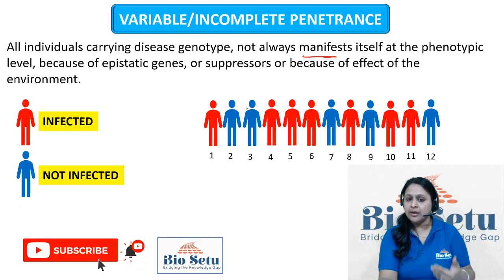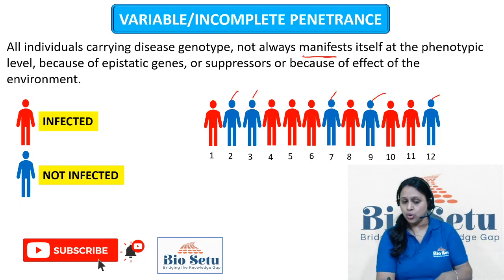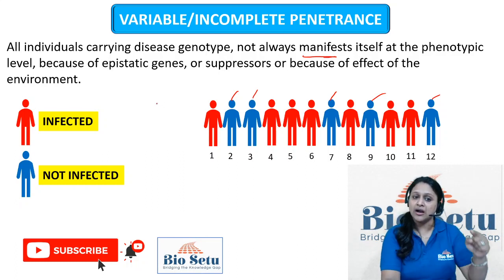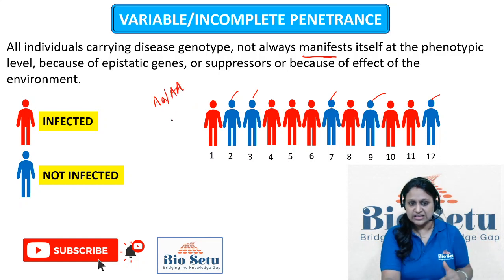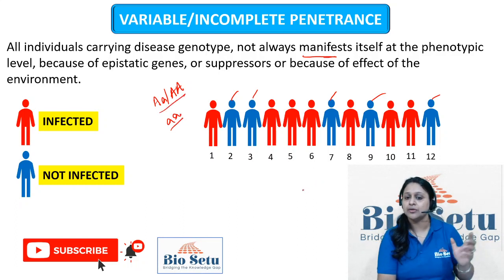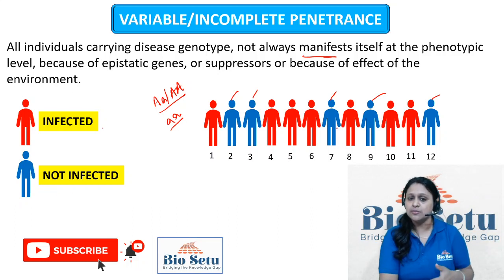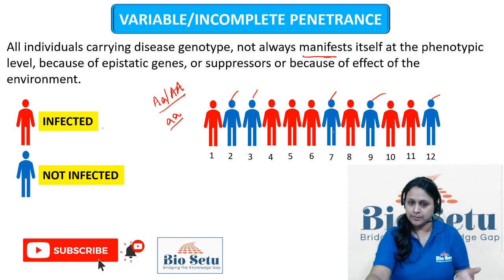As shown here, there are 12 individuals, but some individuals are not showing the disease or trait, even though they have the genotype. Whether it's a dominant or recessive trait, the genotype is present, but the phenotypic expression is varying between different individuals. When this happens, we call it incomplete penetrance. The red ones represent infected individuals and the blue ones represent non-infected individuals, meaning that without the genotype, the disease or phenotypic expression is not able to manifest.